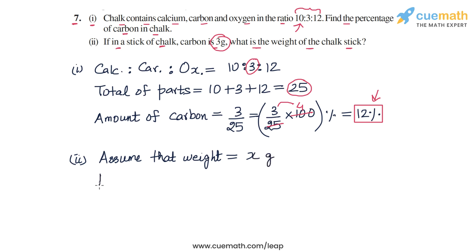Now to set up the proportion, we observe that 12% of the chalk stick will be carbon, which will correspond to 3 grams—this is already given to us. And 100% of the weight of the chalk stick will correspond to x grams, which is what we have to find. So from these two relations we can set up the proportion: 12% is to 100% as 3 grams is to x grams.